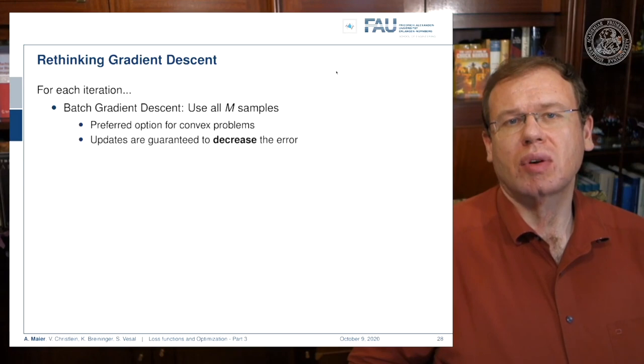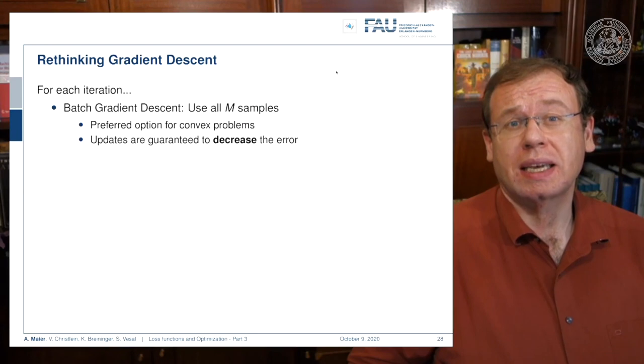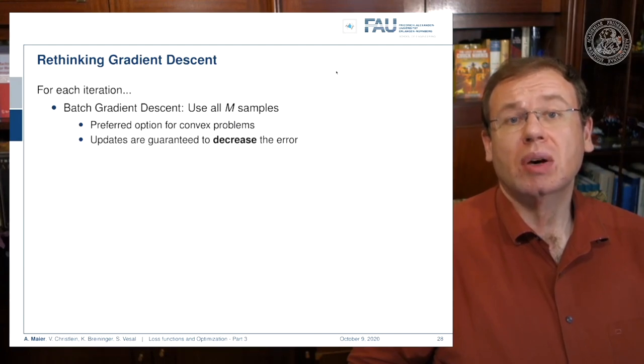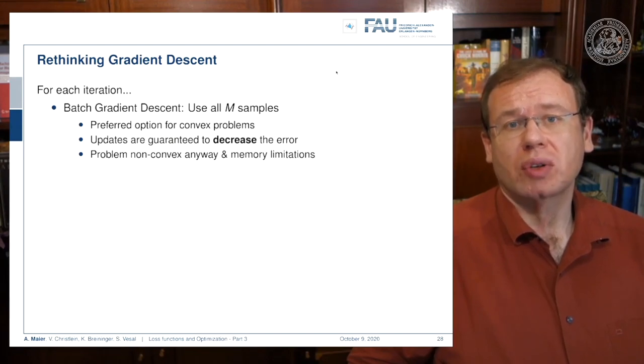You have to look in every iteration for every update at all samples. It may be really many samples, particularly if you look at big data in computer vision problems. This is a preferred option for convex optimization problems because we have a guarantee that we find the global minimum—every update is guaranteed to decrease the error. For non-convex problems we have a problem anyway, and we may have memory limitations.